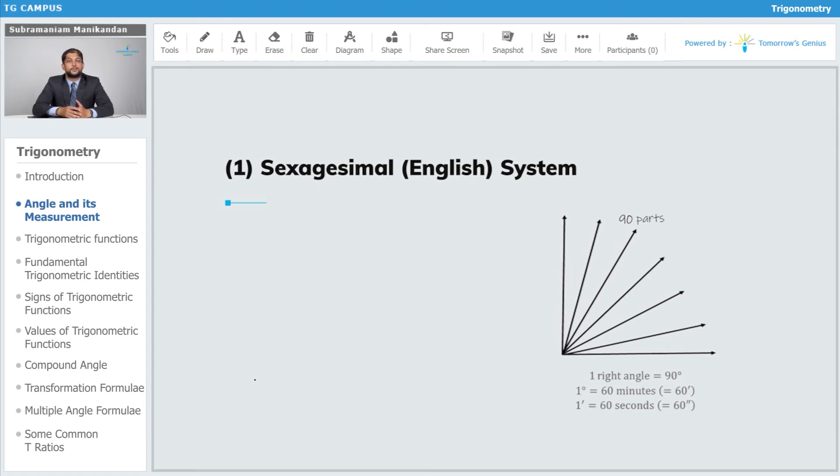Now mind you, the minutes and seconds here do not refer to the units of time—they are angles. But they have a very close connection to the minutes and seconds that we are familiar with, but they are not to be mistaken to be units of measurement of time—they are angles.